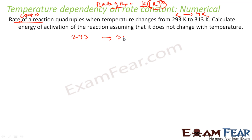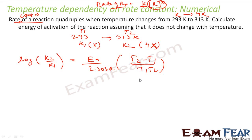So we have 293 Kelvin. Let us assume this was T1 and this is T2, 313K. Here I have K1 and this was K2. If K1 was X, K2 is 4X. The formula which we derived: log K2 by K1 equals EA by 2.303R times T2 minus T1 by T1 T2. This formula is derived from the golden formula K equals A e to the power minus EA by RT.